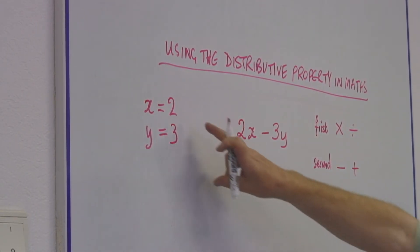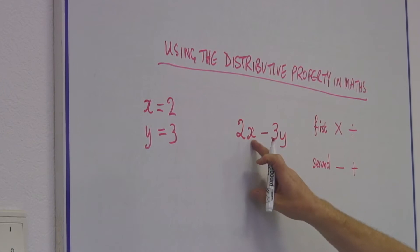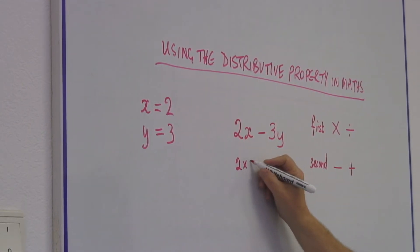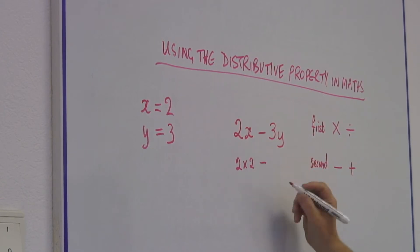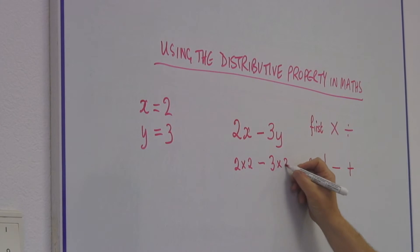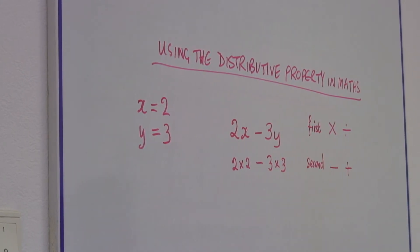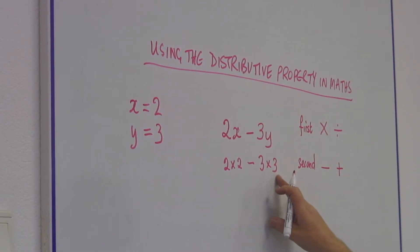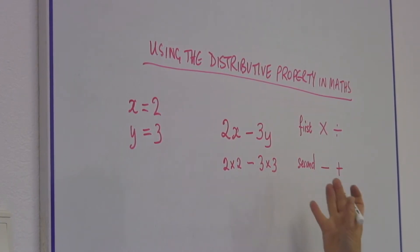So if I put in the values, 2x will be 2 times 2, minus 3y will be minus 3 times 3, and the resultant expression will be 2 times 2 is 4, minus 3 times 3 is 9. It's minus 5.